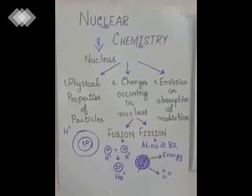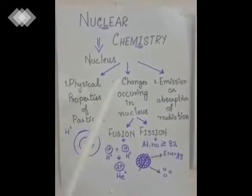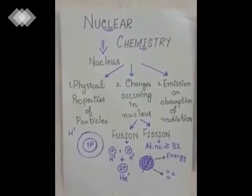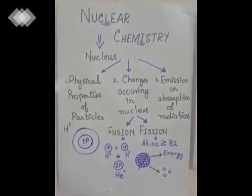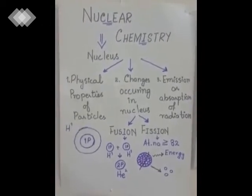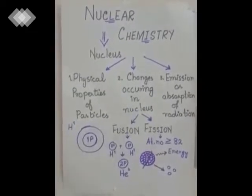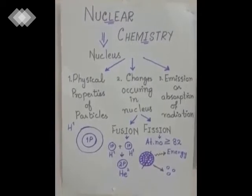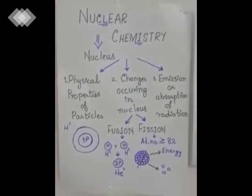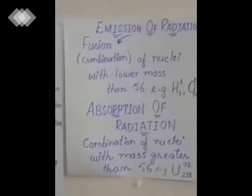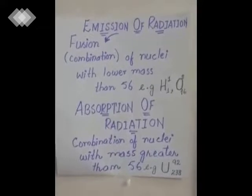The next branch is nuclear chemistry, which is the total study of the nucleus. We discussed the physical properties of particles in the nucleus, the changes occurring in the nucleus — fission and fusion — and the emission or absorption of radiation. Nuclei with atomic mass lower than 56 when combined emit energy, while nuclei with atomic mass greater than 56 when combined absorb energy.